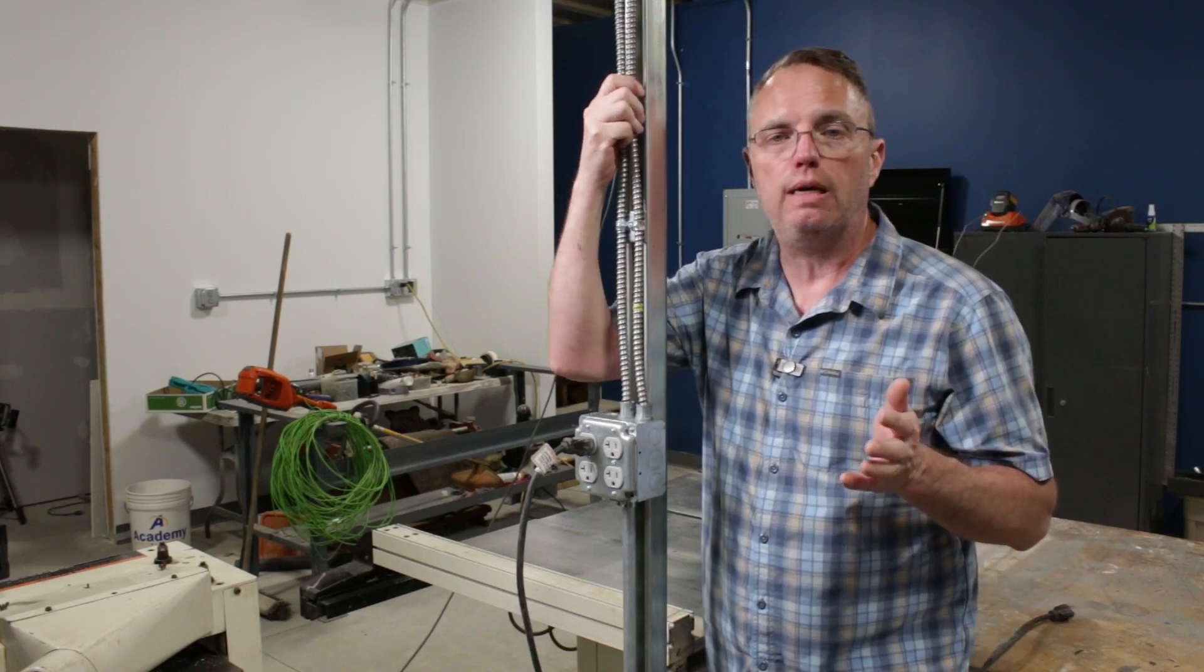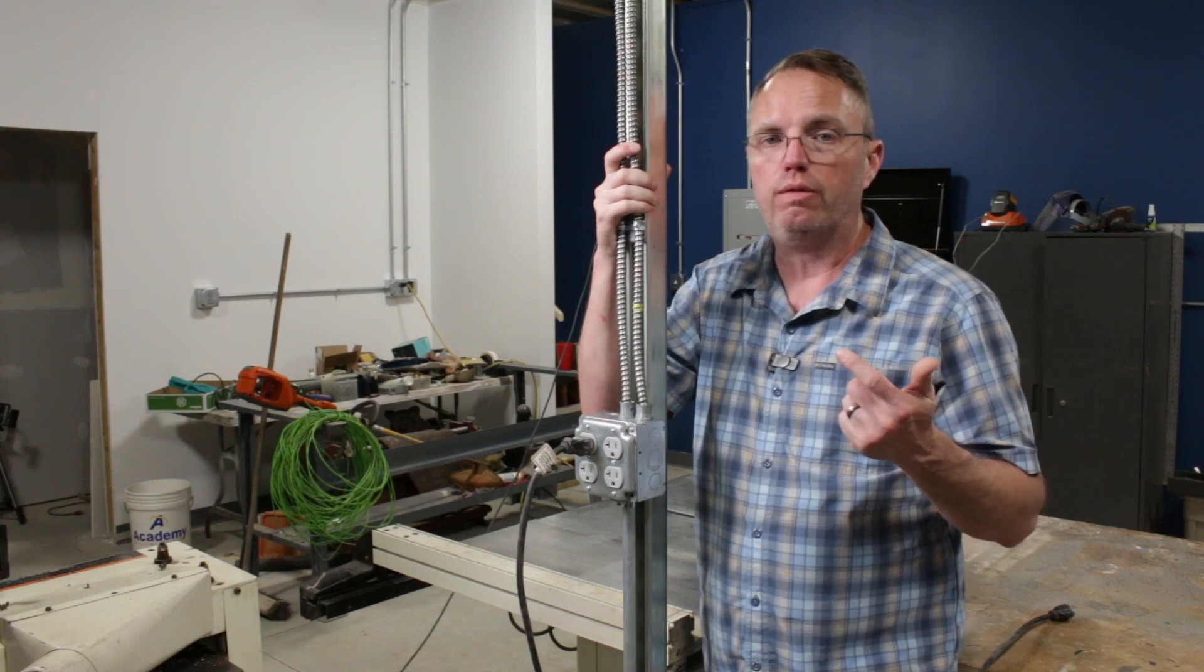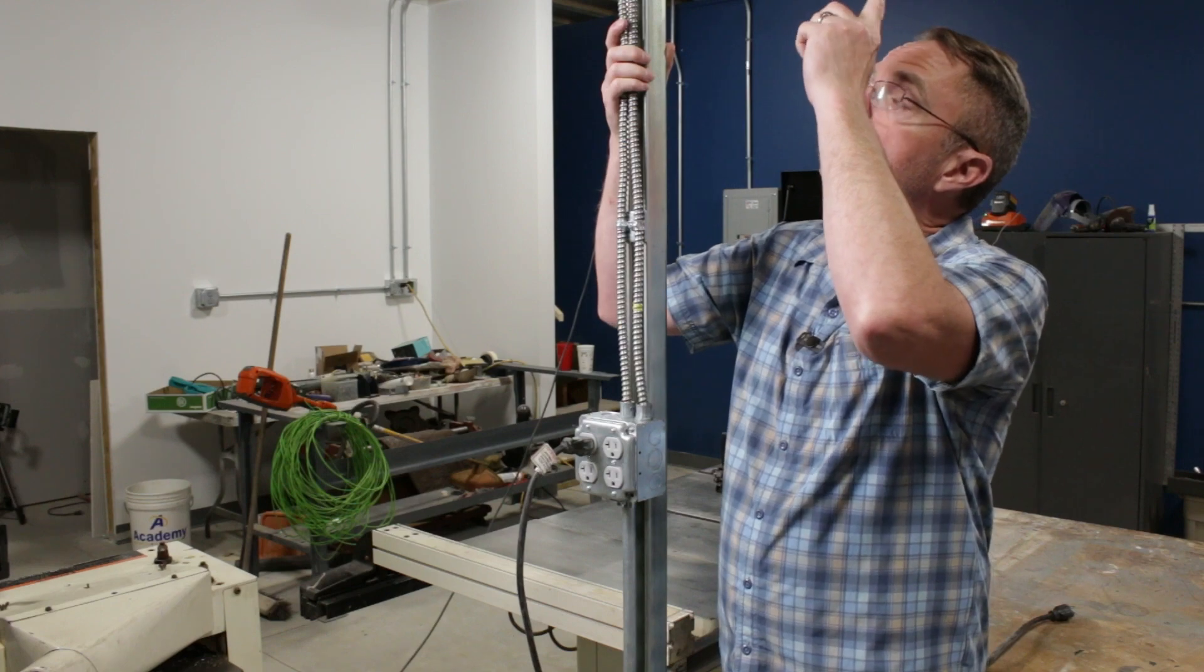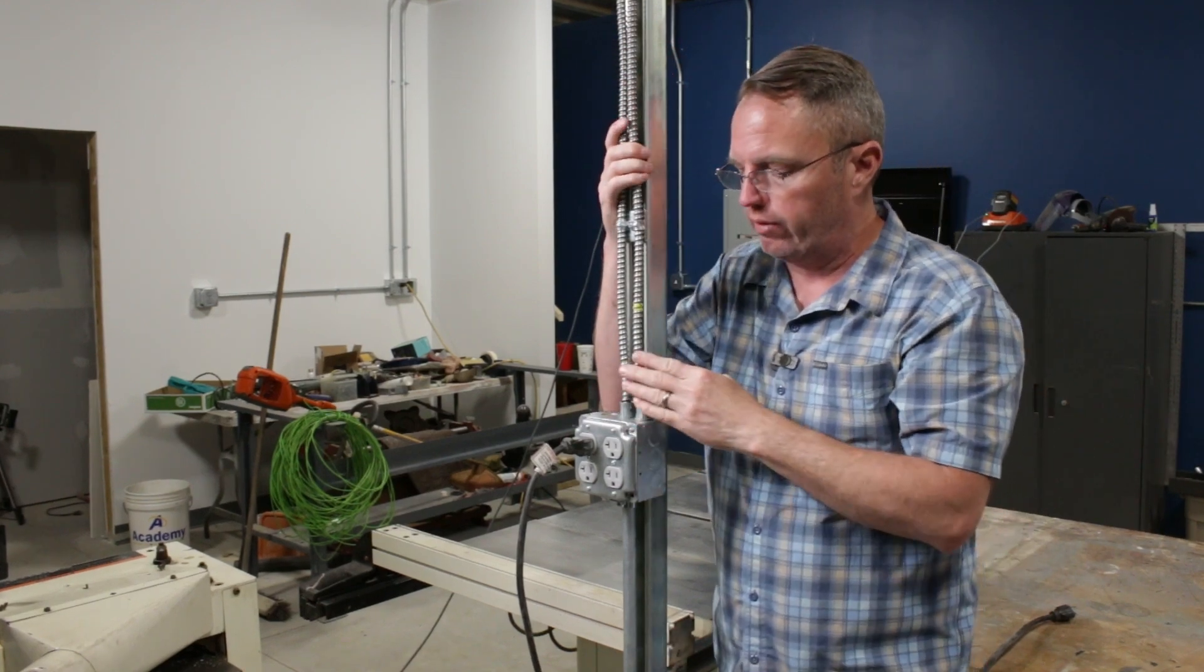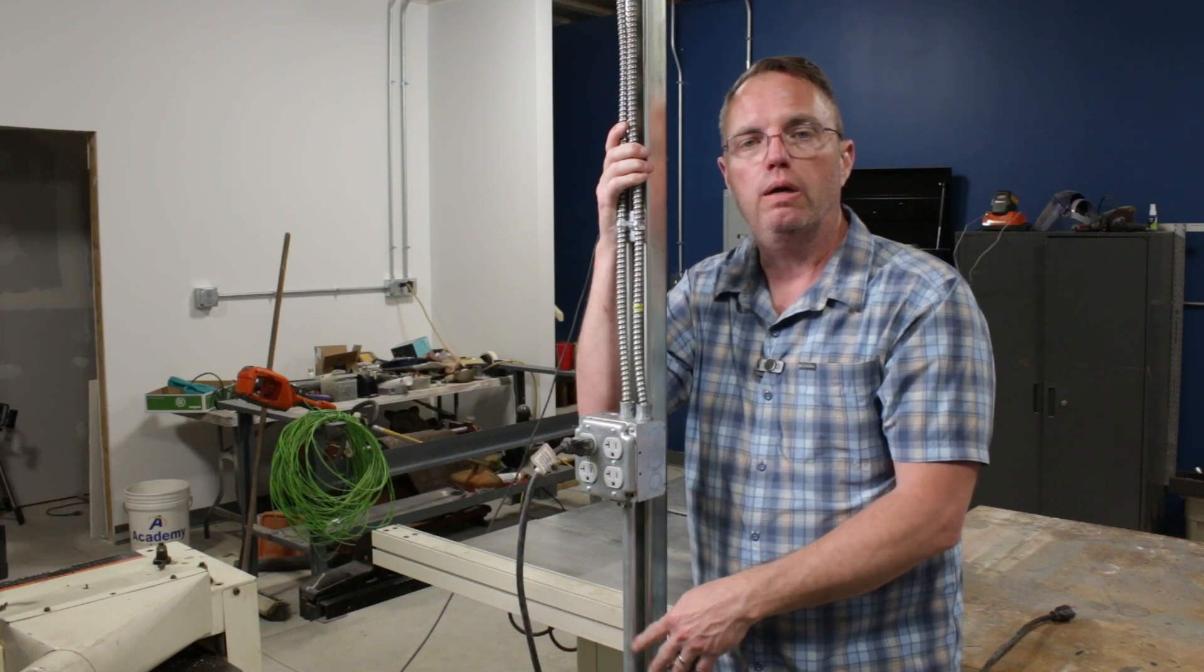The cabling is just MC cable - I think it's metal clad what MC stands for. It just runs from the ceiling box all the way down to the first box and then the conduit down to the 220.